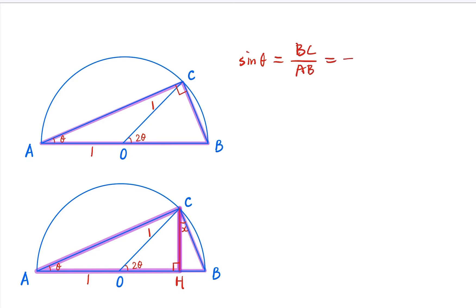Of course, AB is 2, the diameter of the unit circle is 2. So BC is going to equal 2 sine θ.